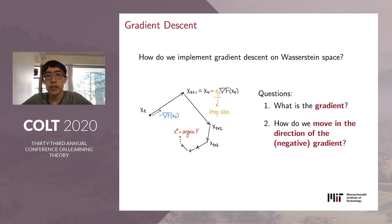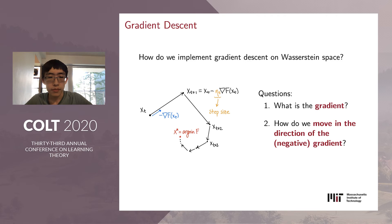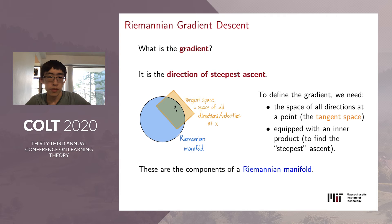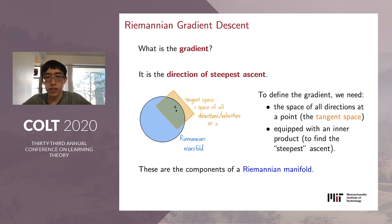Now that we've explained what Wasserstein space is, we need to understand gradient descent in order to generalize it to this space. In the Euclidean setting, gradient descent can be summarized as: look at the direction of the negative gradient, and move in that direction. A gradient can be understood as a direction of steepest descent. To make sense of this, we need two things: at every point in our space, the set of all allowable directions we can travel in—called the tangent space—and an inner product on that tangent space to define steepest descent. These two ingredients, the tangent space along with the choice of inner product on each tangent space, define what is known as a Riemannian manifold, and we can use the tools of Riemannian geometry to help us.